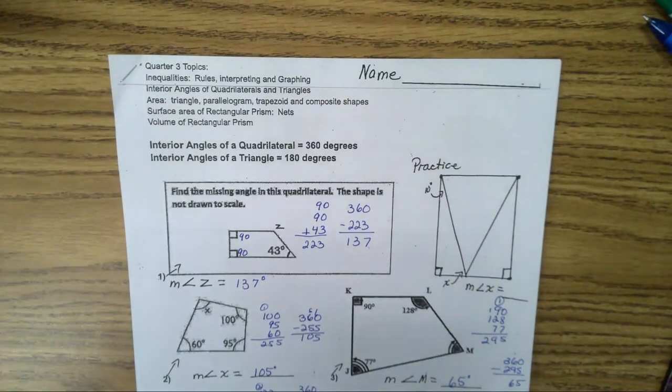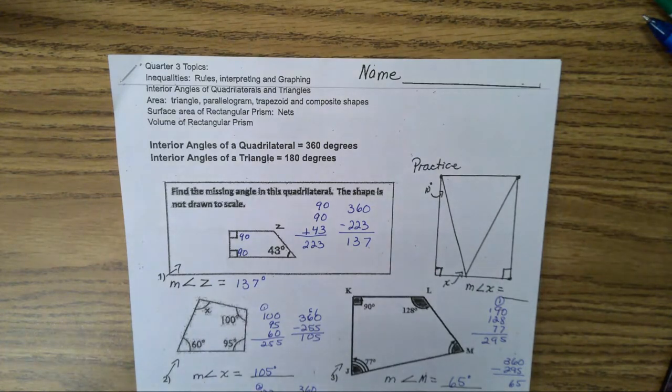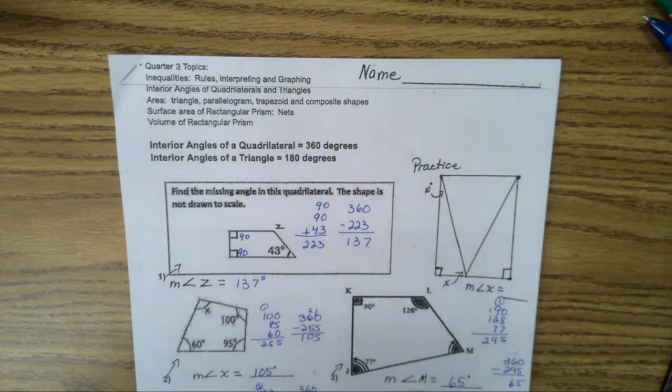This is Mrs. Robertson and today we're going to go over the answers to our quarter three topics review. In this packet we're going to go over the inequality rules and interpreting graphing, interior angles of quadrilaterals and triangles, area of triangles, parallelograms, trapezoids, composite shapes, and the surface area of rectangular prisms nets along with volume of rectangular prisms.